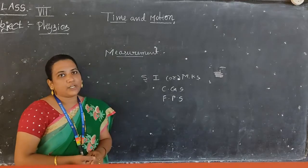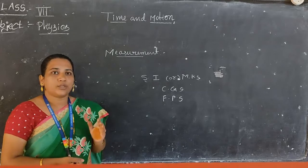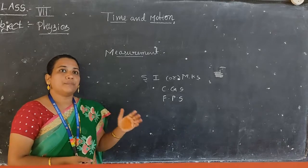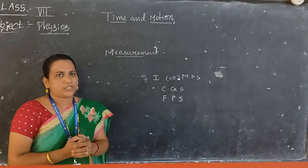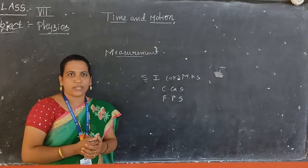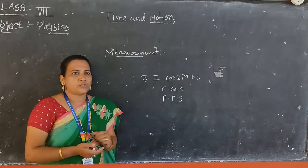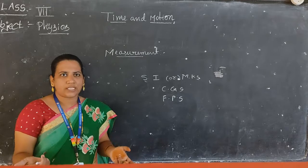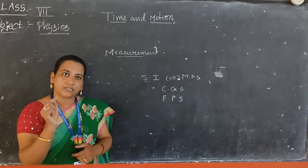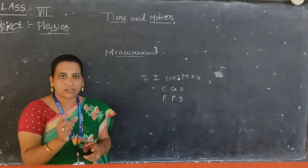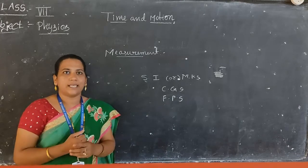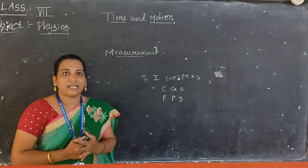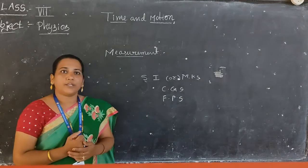We depend on standard units because non-standard units change from person to person. For example, if you take a tall person and a short person of the same age — a tall person's hands are somewhat longer, so their cubit value, hand span value, and foot value will be more. When compared with a short person, those measurements are less. Because of this, we do not use non-standard units to measure physical quantities; we mostly depend on standard units.